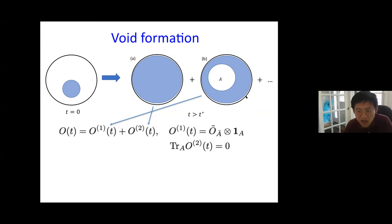By unitarity, the entanglement entropy of Ā must equal SA. Looking at Ā, similar processes occur: operators originally in Ā expand into A, contributing to S_Ā. Since Ā is infinite, operators from arbitrarily far away can eventually reach A, causing S_Ā to grow indefinitely — which would violate unitarity. What saves the day is precisely void formation: operators covering both A and Ā can develop a void in A as time evolves, and this process also contributes to the calculation of S_Ā. These two processes — expansion into A, and void formation in A — balance each other, leading to saturation of S_Ā.